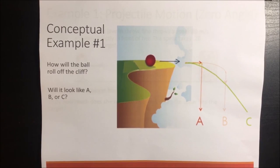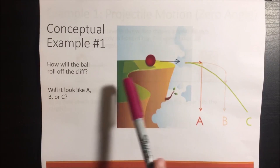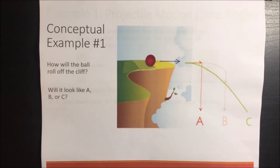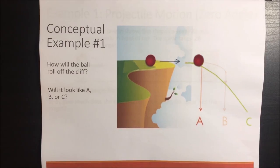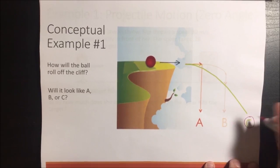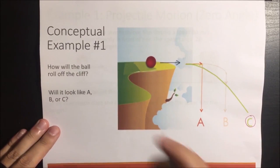Let's do a conceptual question. We have a ball here. How will the ball roll off the cliff? Will it be like A, roll like this and then fall down? Or B, will it go like this and then fall straight down? Or will it be like C, going in a diagonal motion? The correct answer is C — it's going to move like C.